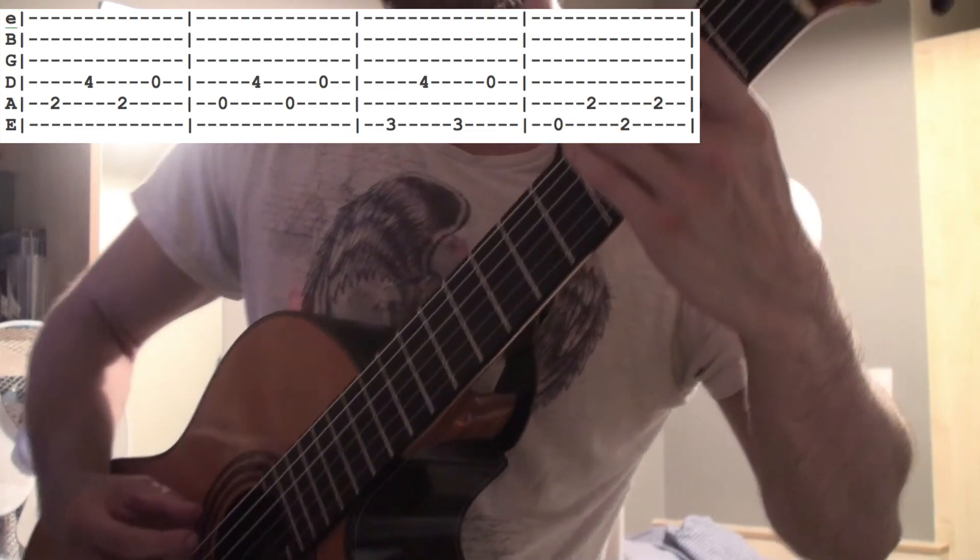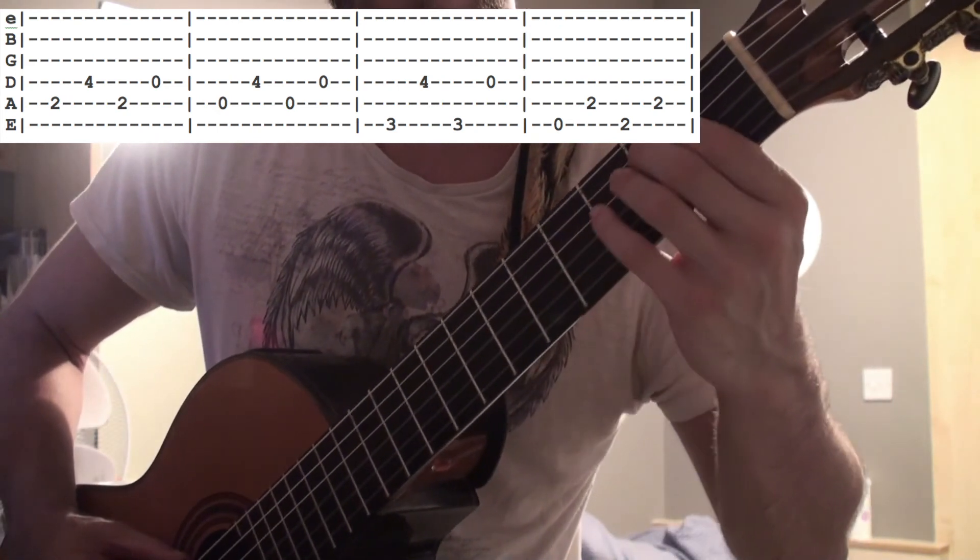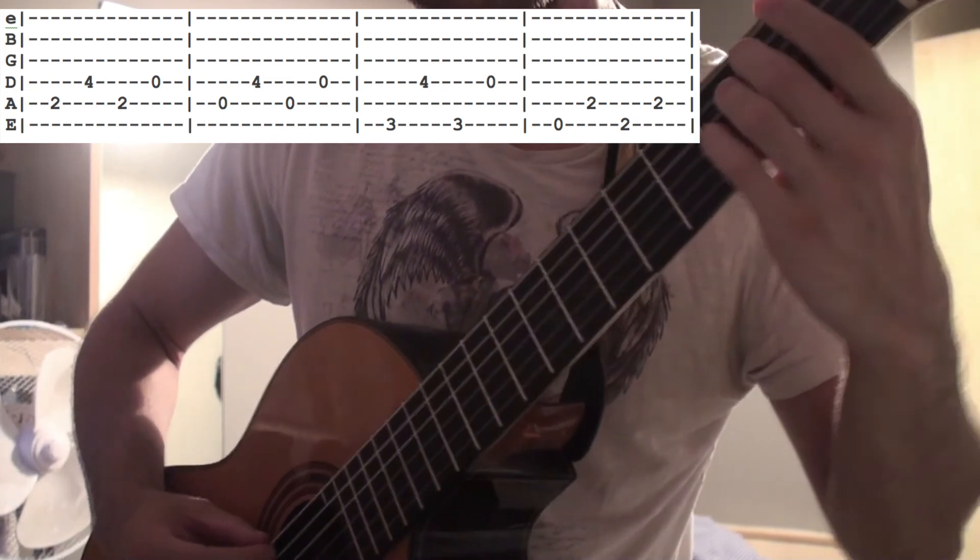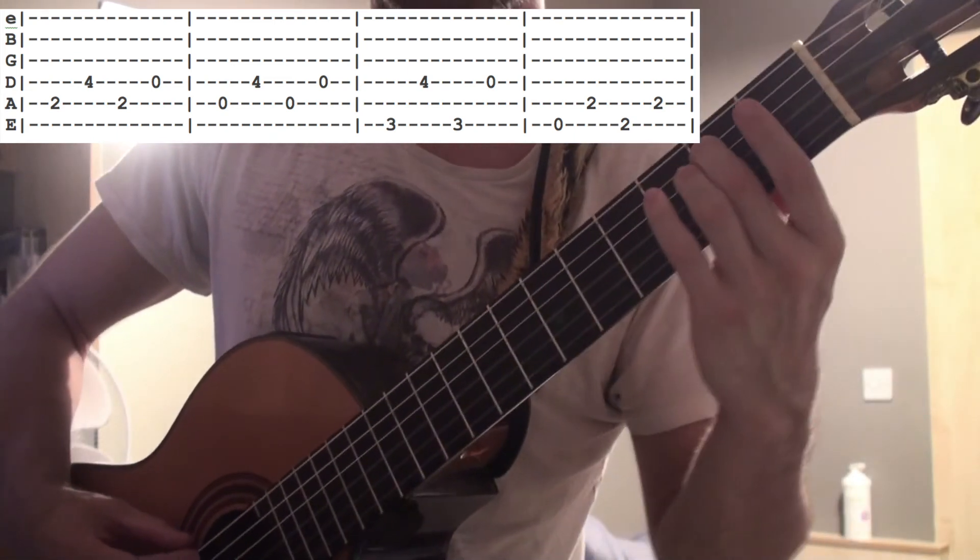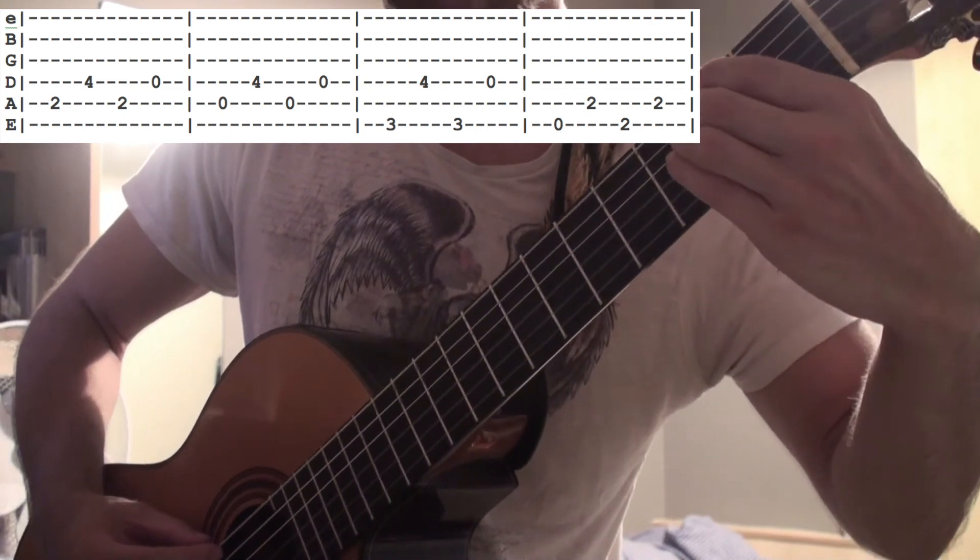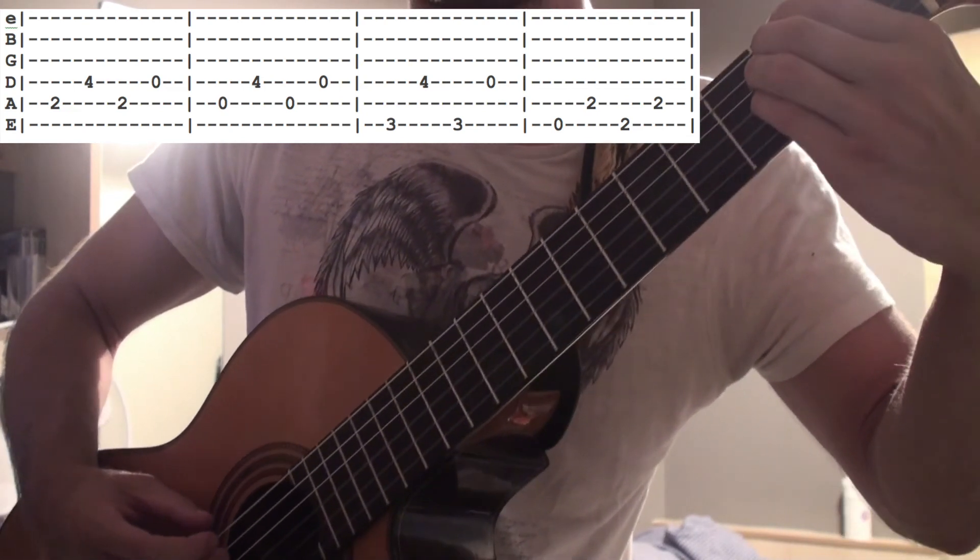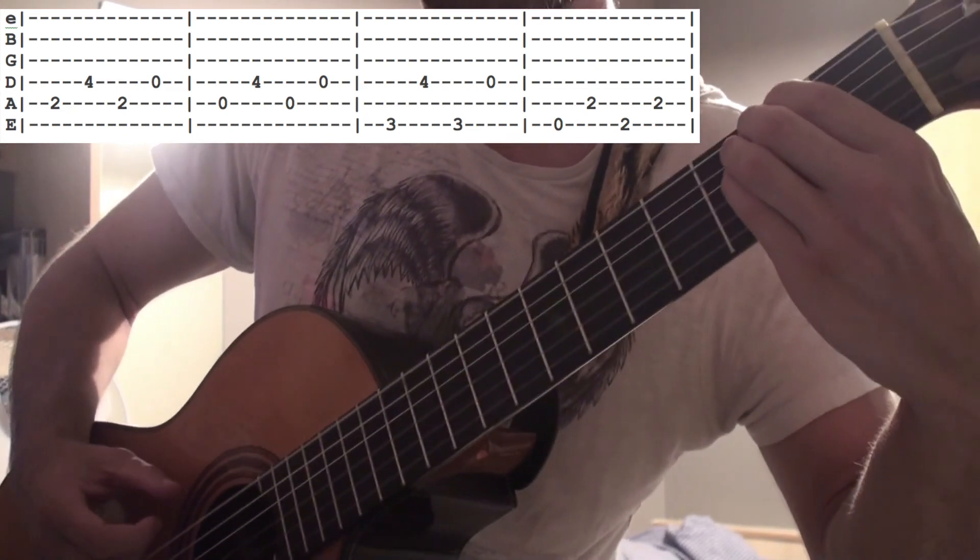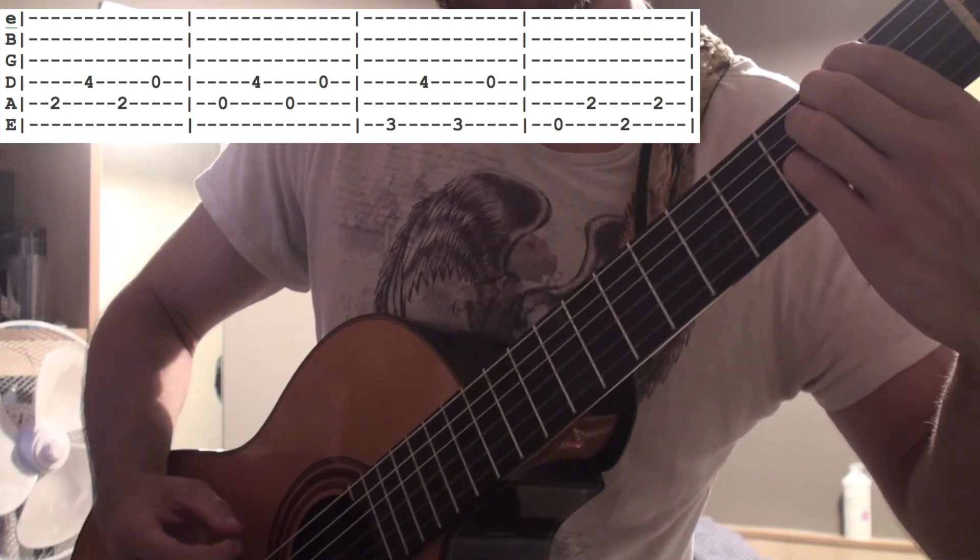And then just to end it, it goes like this. That's a low E open, 2nd fret A, and then you put the 2nd fret on the low E, and then you just play the A 2nd again.